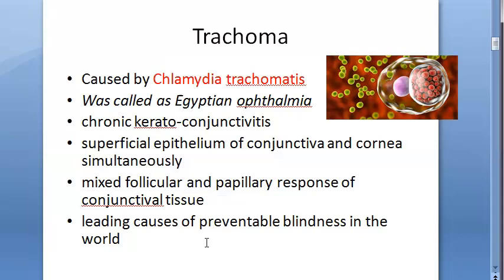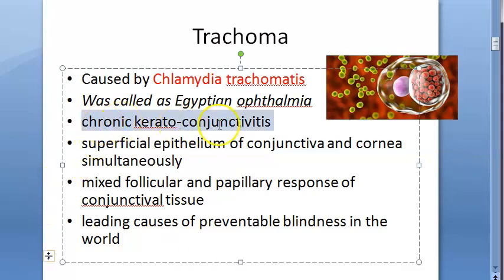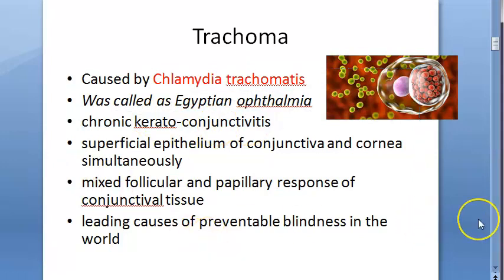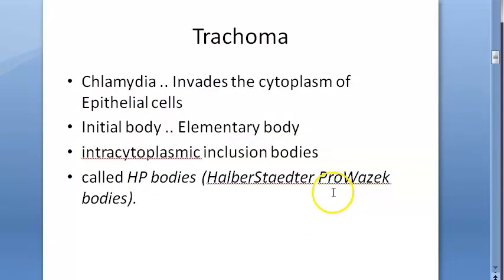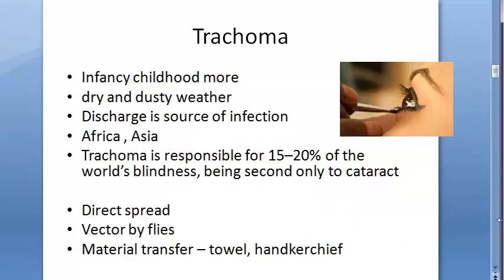Chlamydia trachomatis causes hyper-endemic blinding trachoma. It causes chronic keratoconjunctivitis, involving both the cornea and conjunctiva. It is the leading cause of preventable blindness in the world. Transmission occurs eye to eye, by vectors, and by material transfer like towels and handkerchiefs. Earlier it was called Egyptian ophthalmia.